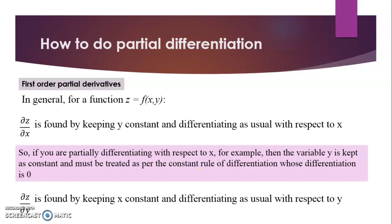To find the first-order partial derivatives: for a function Z = f(X, Y), dZ/dX is found by keeping Y as constant and differentiating as usual with respect to X. Since Y is constant, its derivative is 0 as per the constant rule. Similarly, to find the partial derivative of Z with respect to Y, you keep X as constant and differentiate as usual with respect to Y.